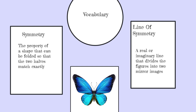Our vocabulary for today is going to be symmetry and line symmetry. Starting with symmetry, which can be defined as the property of a shape that can be folded so that the two halves match exactly. We're going to look at this butterfly over here, which seems to be a symmetric shape, because these two halves could fold over and match exactly.